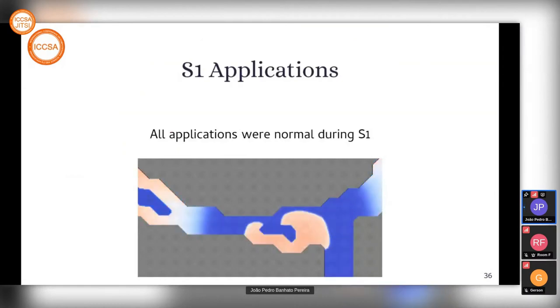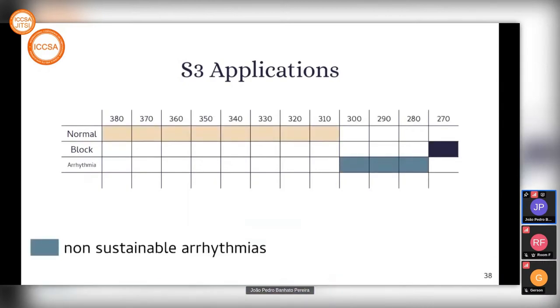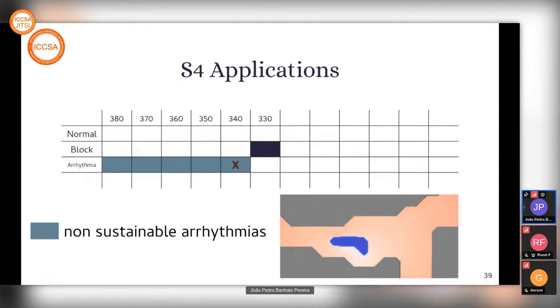In our application, the S1 application was all normal. In the S2, the first interval we used already blocked. Following the protocol, we moved to the next stimulus, S3. In S3, we got three different intervals with non-sustainable arrhythmias right before it blocked. In S4, we got five different intervals with non-sustainable arrhythmias. That 340 millisecond interval is the one represented by the GIF.